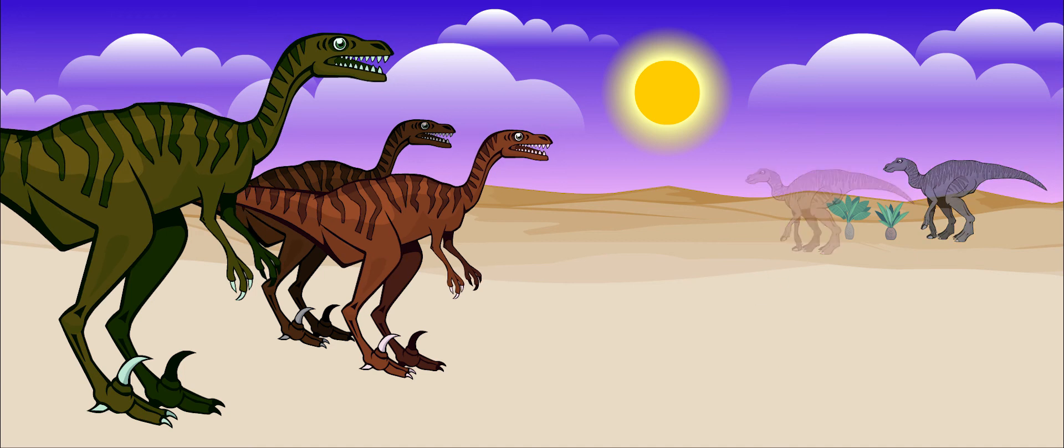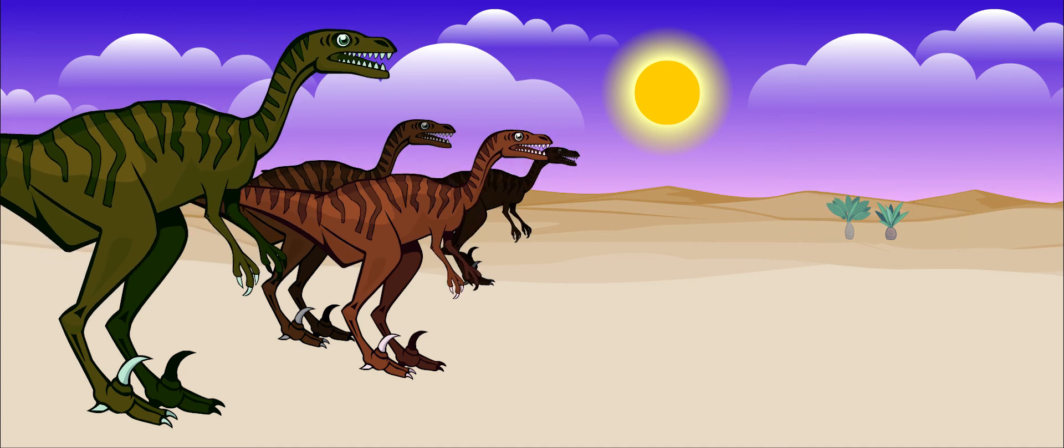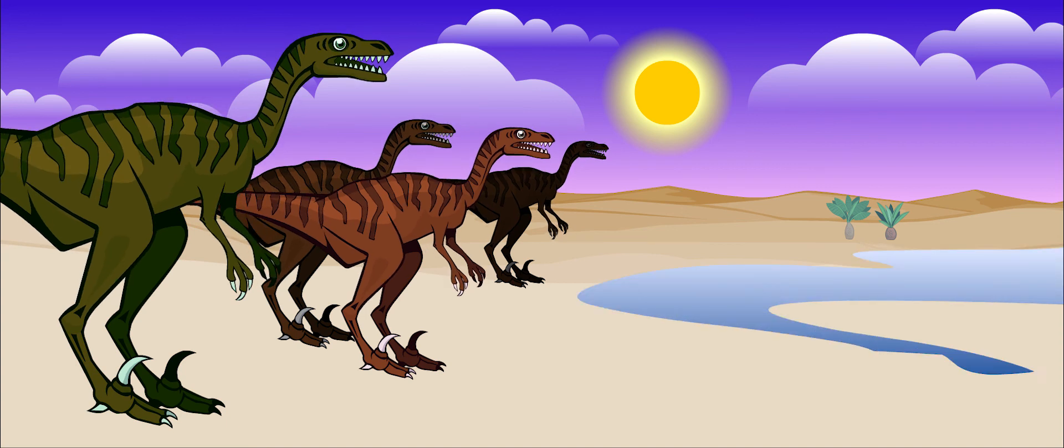Velociraptor lived in hot, dry places. The best place for this dinosaur to live was a desert with freshwater streams.